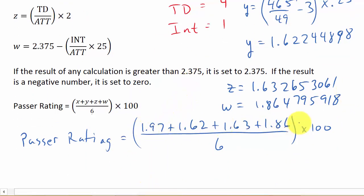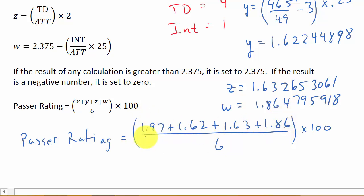Make sure when you punch this into your calculator you add all four values first and then divide by 6. Don't enter them without parentheses, or it will divide only the last value by 6 and add that result. When done correctly you get a passer rating of 118.2 - quite a bit of calculations, which is why I set up a spreadsheet.